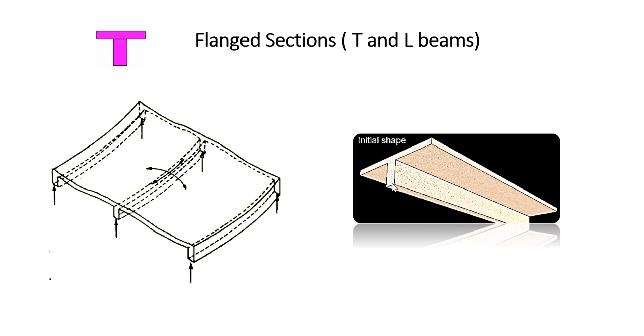Where a slab and beam together form a single unit, that section is called a flange section. Here it is a T-beam because the beam spans on both directions and it resembles the shape of the letter T.